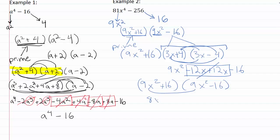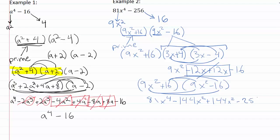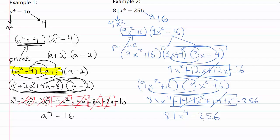Nine x squared times nine x squared is eighty-one x to the fourth; nine x squared times negative sixteen is minus one forty-four x squared; sixteen times nine x squared is plus one forty-four x squared; and sixteen times negative sixteen gives minus two fifty-six. The two one forty-four x squared terms cancel out, leaving eighty-one x to the fourth minus two fifty-six — our original expression, confirming it is completely factored.